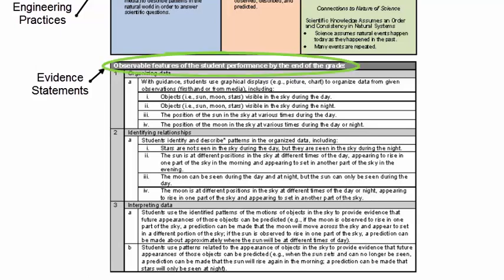Evidence statements are observable features of the student performance by the end of the grade. In other words, the evidence statements provide a kind of roadmap for the teacher to see what outcomes a student should exhibit to achieve the performance expectation or meet the standard. Evidence statements can inform a rubric for performing the expectation over the course of the learning cycle.